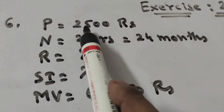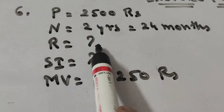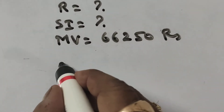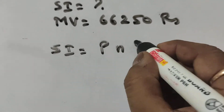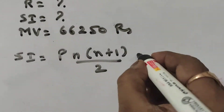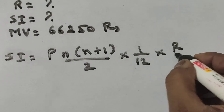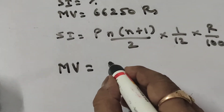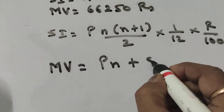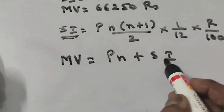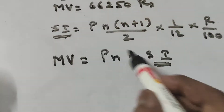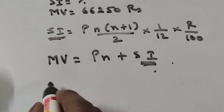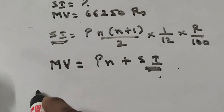So we have the data: principal amount paid every month for 2 years is 2500 rupees, rate of interest we have to find out, and the simple interest we have to find out. Now let us write down the simple interest formula: SI = P × (n+1)/2 × 1/12 × r/100. And the maturity value formula: Maturity Value = P×n + SI. Since SI equals that expression, we can substitute the whole SI formula in and work with the values.